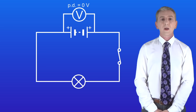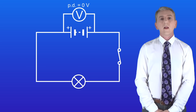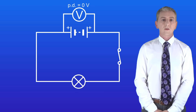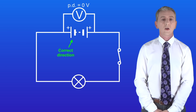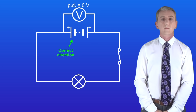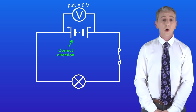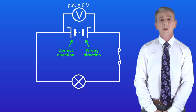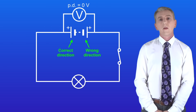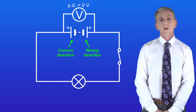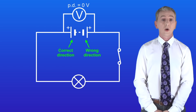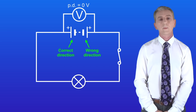We can explain that by looking at the direction of the cells. The left-hand cell is pointing in the correct direction with the positive end on the left. However, the right-hand cell is pointing in the wrong direction. This means that the potential differences of these cells cancel out, so the battery has an overall potential difference of zero.